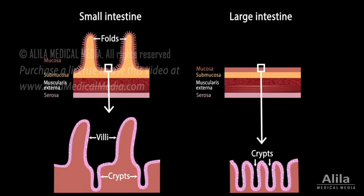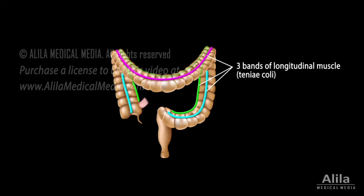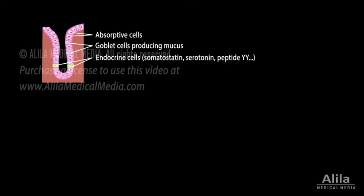The wall of the large intestine is composed of the same four layers as the small intestine, but there are major differences. Firstly, there are no circular folds or villi, only intestinal crypts. Secondly, the longitudinal muscle layer does not cover the whole diameter of the colon but exists as three ribbon-like bands that run along its length. Tonic contractions of these bands bunch up the colon into pouches called hostra, giving it a segmented appearance. The major product of the intestinal crypts is mucus, although there are endocrine cells producing hormones.